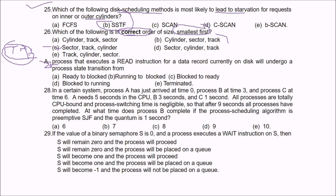Question 27: A process that executes a read instruction for a data record currently on disk — what process state transition will occur? The answer is B — running to blocked. Running to blocked is the correct process state transition here.